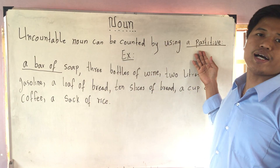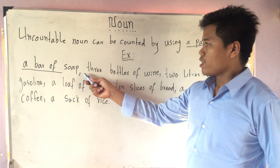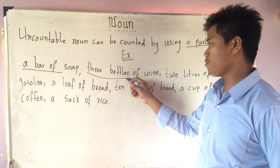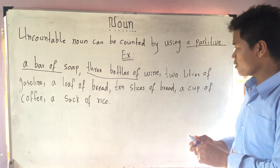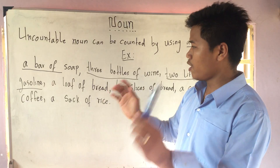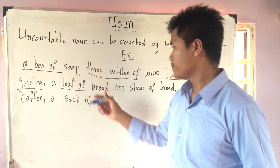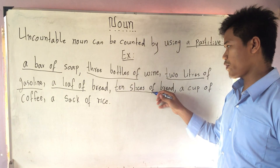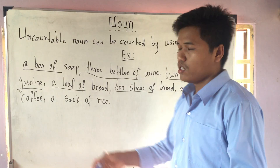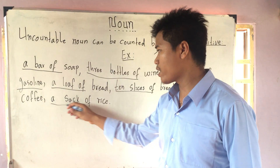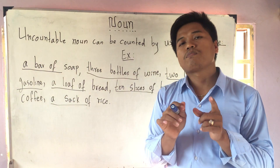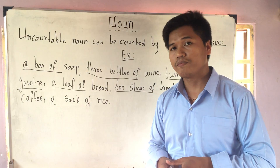For example: a bar of soap — 'a bar of' is a partitive. Three bottles of wine — 'three bottles of' is a partitive. Two liters of gasoline, a loaf of bread, ten slices of bread, a cup of coffee, and a sack of rice — all of these are partitives.